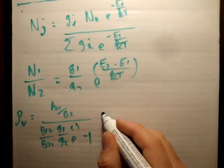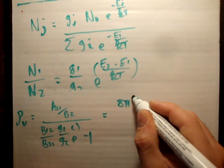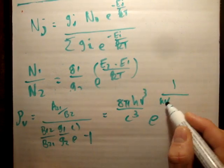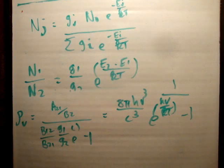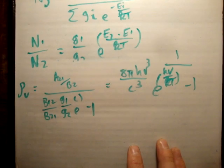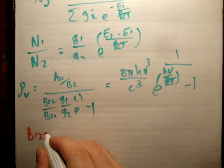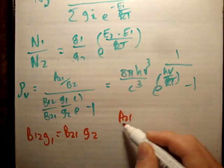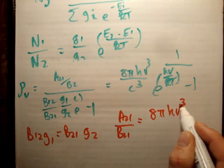If you've done a bit of quantum physics, you'll know that the energy density in a blackbody cavity is equal to 8π h nu cubed over c cubed, times 1 over (e to the h nu over kT minus 1). Although this is for a blackbody cavity, it actually generalizes to cavities in general. So if you compare the two expressions, you'll find that B12 times g1 equals B21 times g2, and A21 over B21 equals 8π h nu cubed over c cubed.